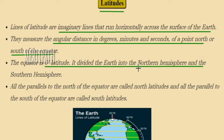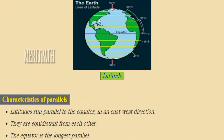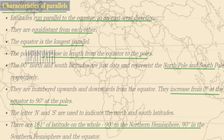The equator is located at zero degrees latitude and divides the earth into two equal halves: the Northern Hemisphere and the Southern Hemisphere. All lines parallel to the north of the equator are known as northern latitudes, and all lines parallel to the south of the equator are known as southern latitudes.